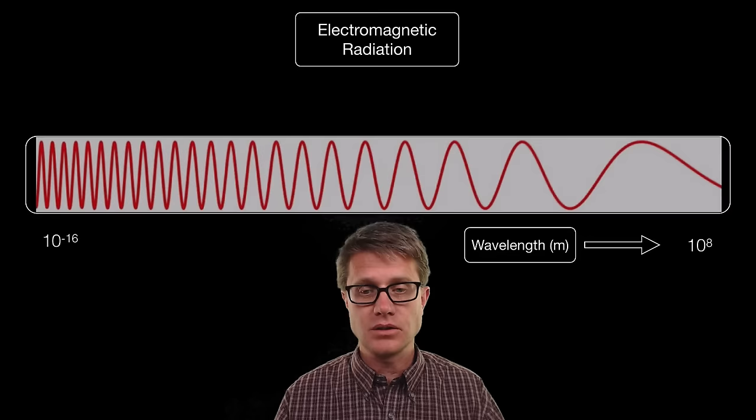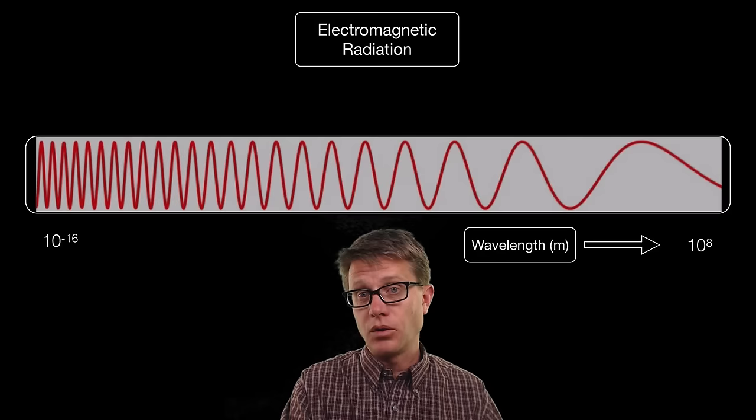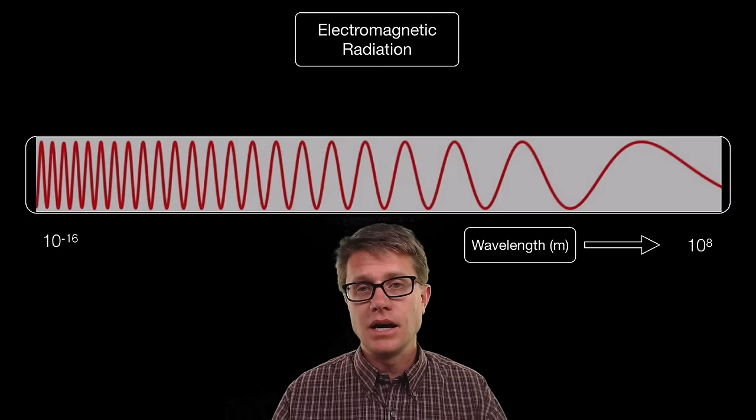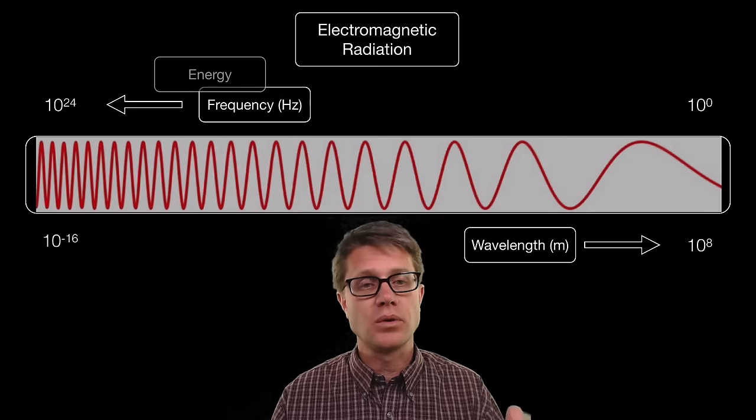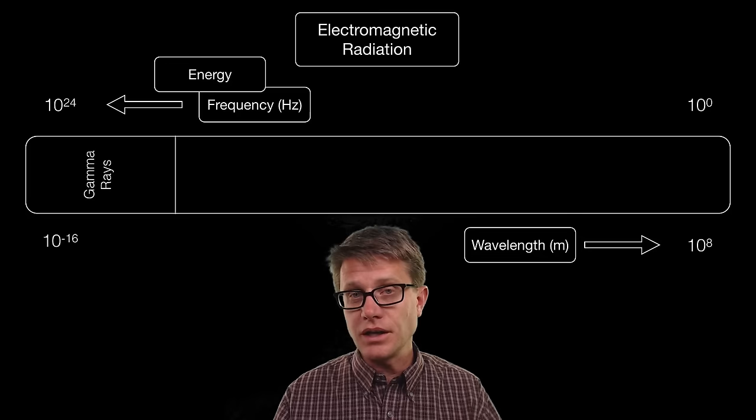We can put it on a spectrum and measure it from really small wavelengths to really long wavelengths up to kilometers. In the other direction we have increasing frequency. As we increase frequency, we decrease wavelength. As we increase frequency in electromagnetic radiation, we also increase the amount of energy those waves have.